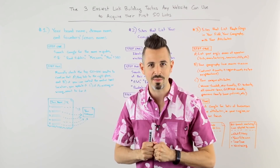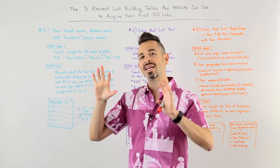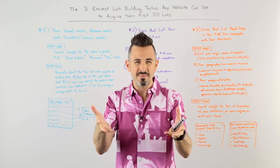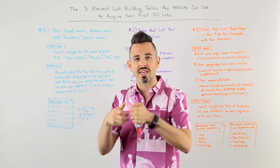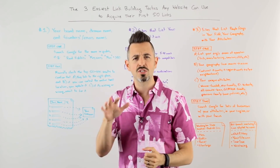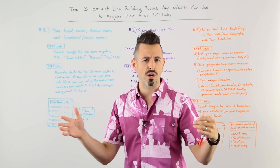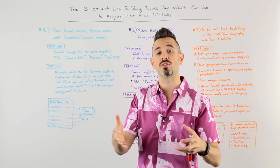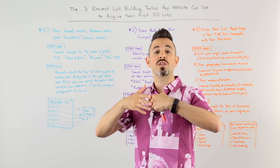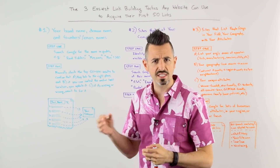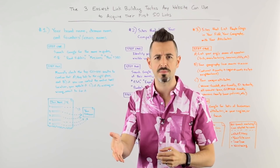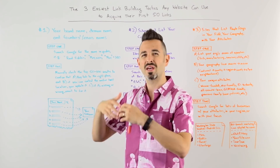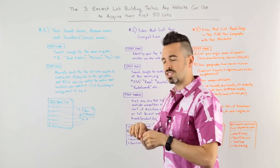Howdy, Moz fans, and welcome to another edition of Whiteboard Friday. This week we're going to chat about how to get those first few links that every website needs to be able to compete. When you get started with link building, it can seem daunting and overwhelming. Let me walk you through what is essentially three or four hours of work to try these three tactics that will almost certainly get your business or organization the first handful — let's say 50 links — that you need to start being able to compete. Content can take you a long way, keywords can take you a long way, engagement and interaction take you a long way, but you've got to have a base of links.